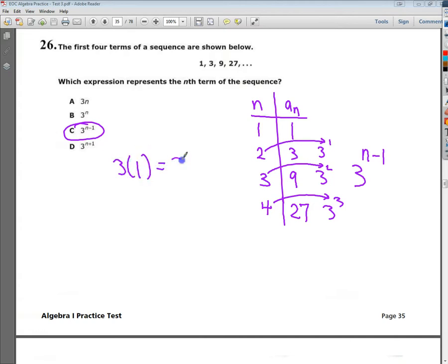3n, 3 times 1. That one works perfect. 3 times 2 is supposed to give me 3. It gives me 6. So, nope, it's not that one.